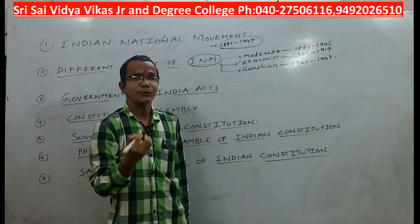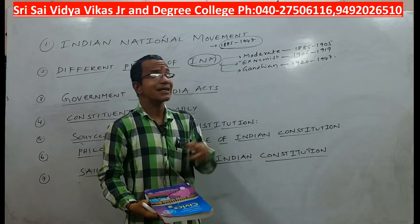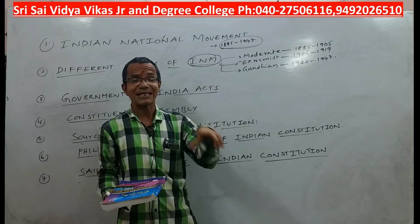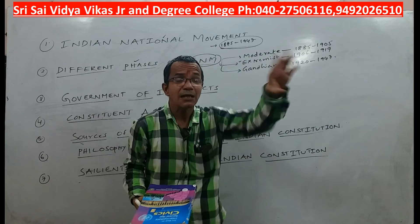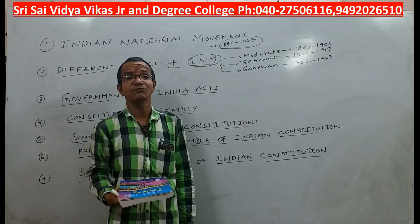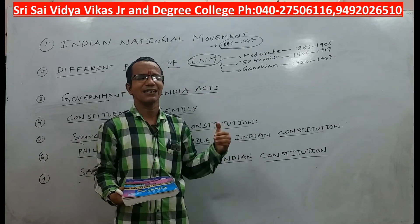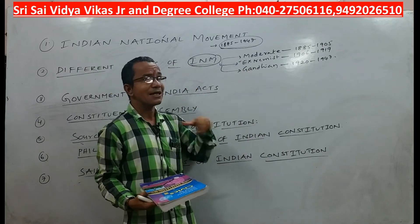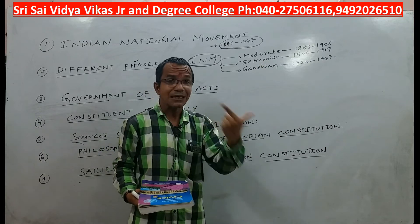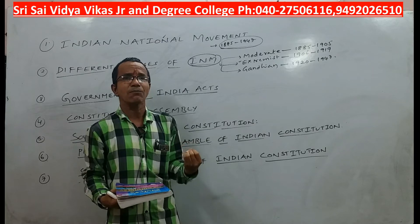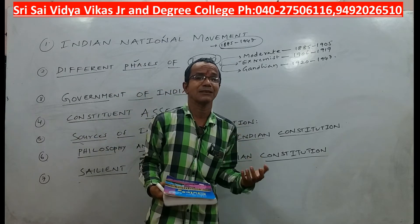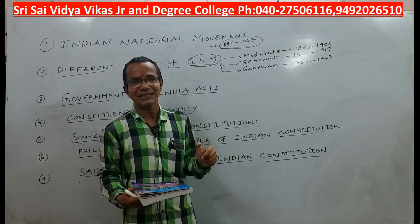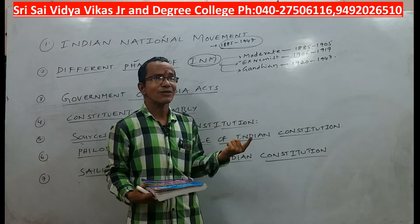Extremists were quite opposite to moderates and criticized them. Extremists believed that the poor conditions of Indians were because of British policies only. Lord Curzon's cruel policies and the partition of Bengal were few basic reasons for the existence of extremism. Aurobindo Ghosh, Bal Gangadhar Tilak, Lala Lajpat Rai, and Vipin Chandra Pal are a few important leaders of the extremist phase.